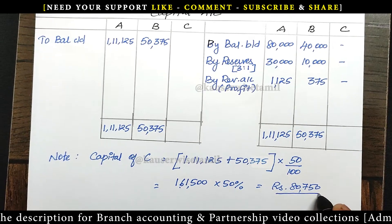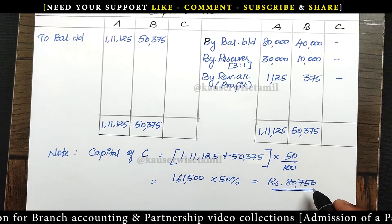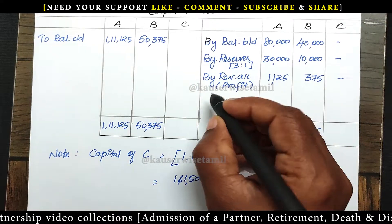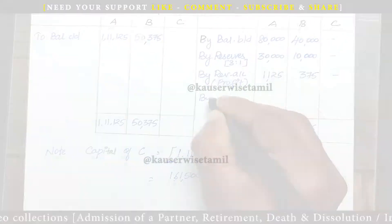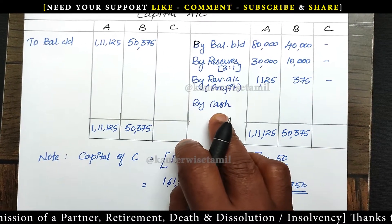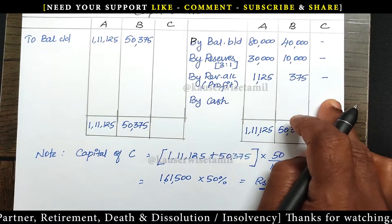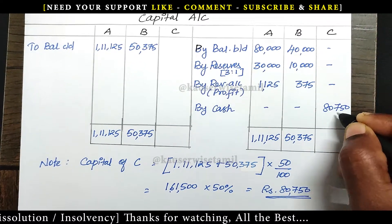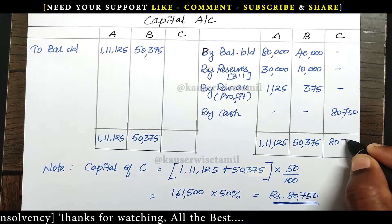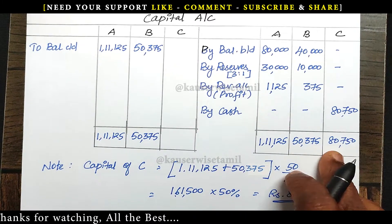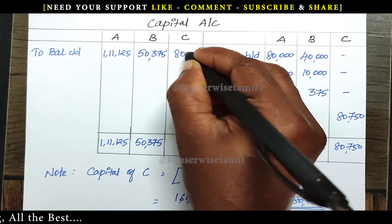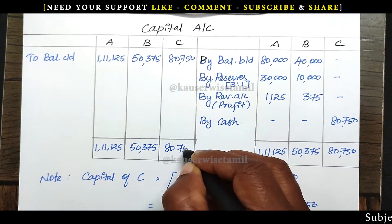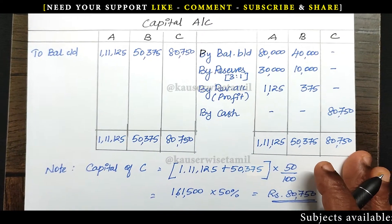C introduces capital of 80,750. The entry is: Cash account debit to C's capital account 80,750. So C's closing capital in the new balance sheet is 80,750. Finally, after preparing the revaluation account and capital account, we prepare the new balance sheet.